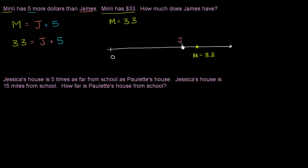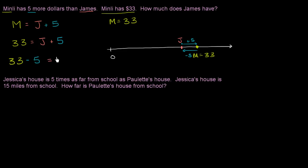You start at J, add five, and you get to 33. How can I start with the amount Min Lee has and end up with the amount James has? I could just go the other way around — start with M and subtract five. So 33, which is M, minus five is equal to the amount of money that James has.